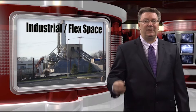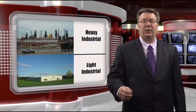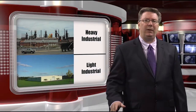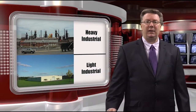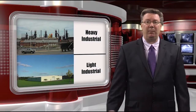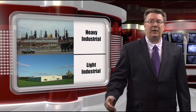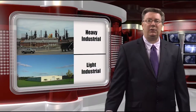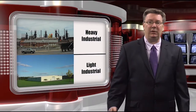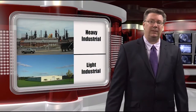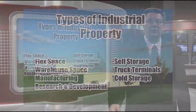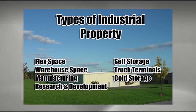Our fourth type of property is industrial or flexible space. Industrial property is often described as either light industrial or heavy industrial, although the difference is often vague. Light industrial typically refers to lower impact storage and manufacturing, and may include warehousing, wholesaling, assembly of product, or research and development. Heavy industrial typically refers to manufacturing, producing, processing, or refining products or raw materials, and often requires larger land parcels and accessibility to transportation such as rail lines or major highways. The seven basic forms of industrial property are flex space, warehouse space, manufacturing, R&D, self storage, truck terminals, and cold storage.